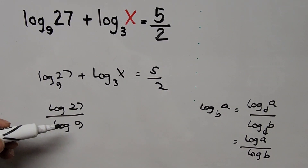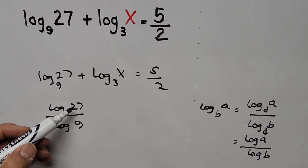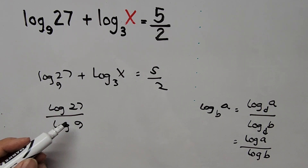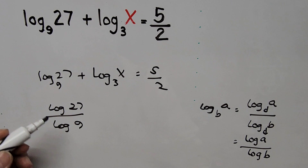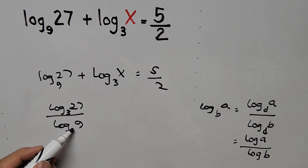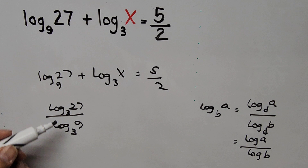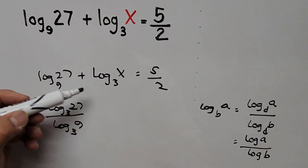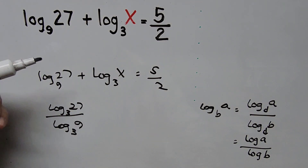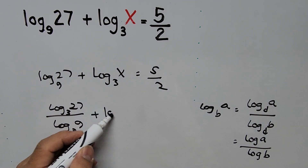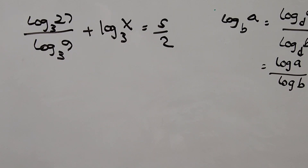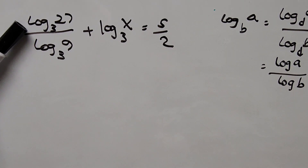We choose a base related to both 27 and 9. The number 3 is a factor of both, so we put base 3 in the numerator and base 3 in the denominator. Now we have a common base. The equation becomes: log of 27 base 3 divided by log of 9 base 3, plus log of x base 3, equals 5 halves.